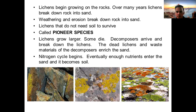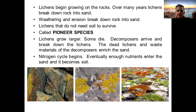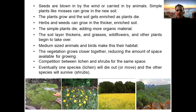Since lichens come up first and are in the pioneer stages, they are known as pioneer species. The lichens grow, and some of them may also die. After the death of lichens come the decomposers, which break down the lichens. The waste material of these decomposers enriches the sand. Because decomposers are now present, there is the beginning of the nitrogen cycle. Eventually, because of the presence of decomposers, lichens, and the nitrogen cycle, the sand enrichment begins and eventually converts into soil.